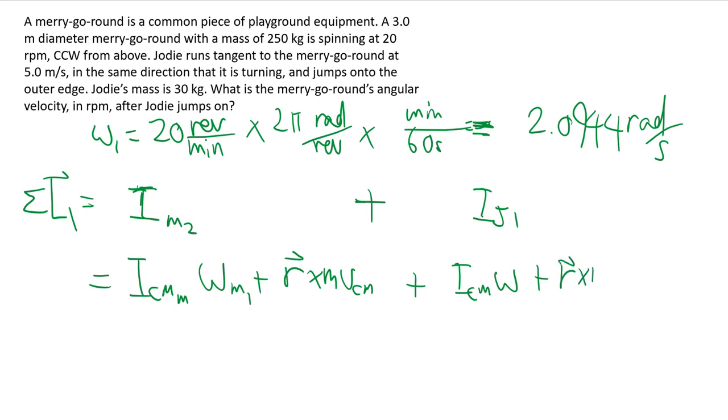But it doesn't actually negate what we've done before, because in all those cases the center of mass of the spinning objects, like the merry-go-round in this case, is not moving. So that term goes away and we're left with our familiar I omega term.